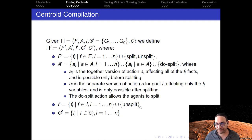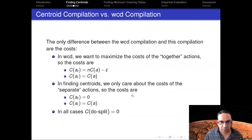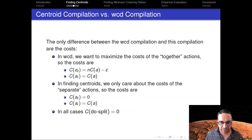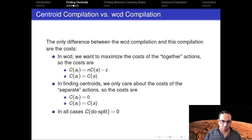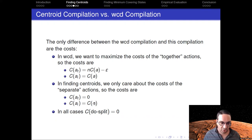What I haven't shown are the action costs. For worst-case distinctiveness, we want to maximize the costs of the together actions, so executing an action together gives a slight discount of epsilon — instead of costing n times the cost of a, it costs n times the cost of a minus epsilon. Executing an action separately costs as usual. But when looking for a centroid state, we only want to optimize the cost of the separate actions. So to find centroids, the only change is to make the cost of the together actions zero and the cost of the separate actions the same. Splitting is a free action in all cases.